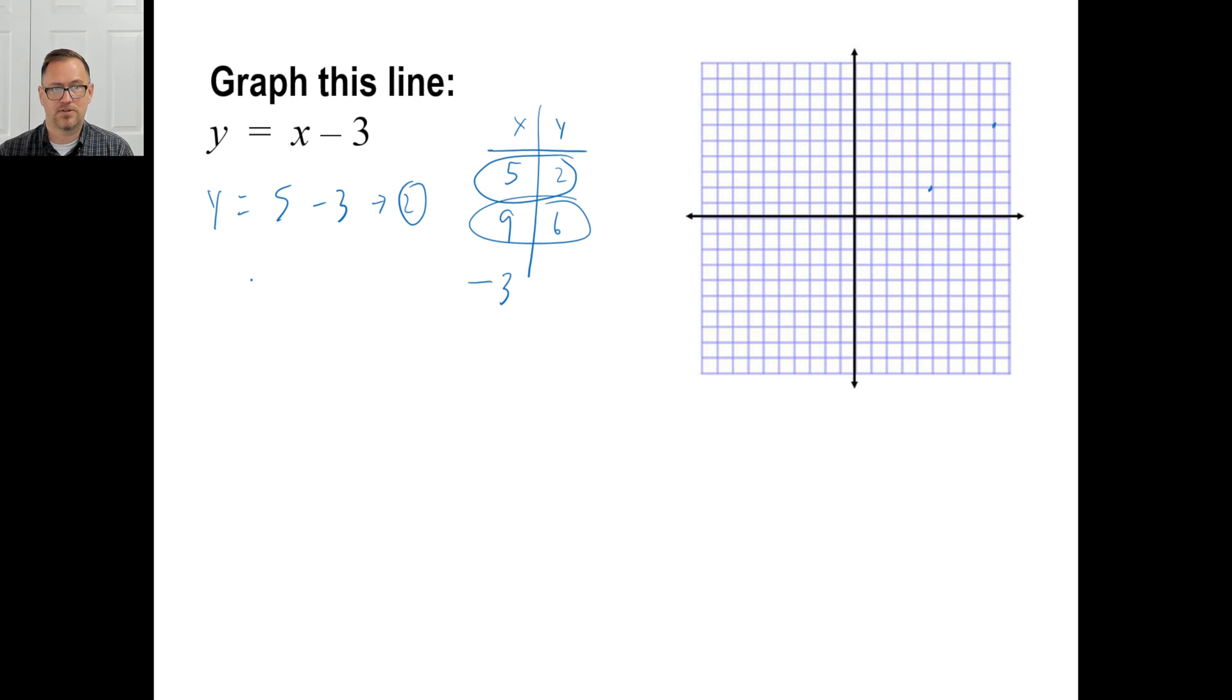Negative three. This is a little trickier. Y is equal to X is negative three. Negative three minus three. Negative three minus three is negative six. There's my next point. So negative three, and then down six. There's my third point. What a disaster. Close enough.